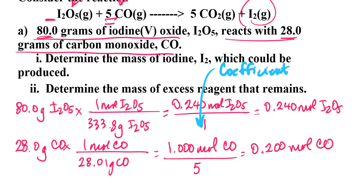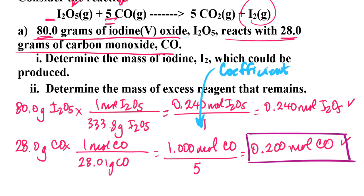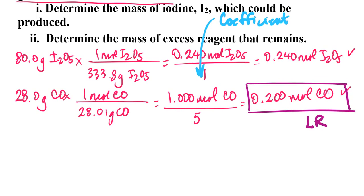The smaller of these two numbers will tell you which of the two reagents is the limiting reagent. As we can see, the 0.200 moles of carbon monoxide is smaller. So that means that the carbon monoxide is my limiting reagent. Once I have that figured out, I can go ahead and calculate out how much iodine would be produced.